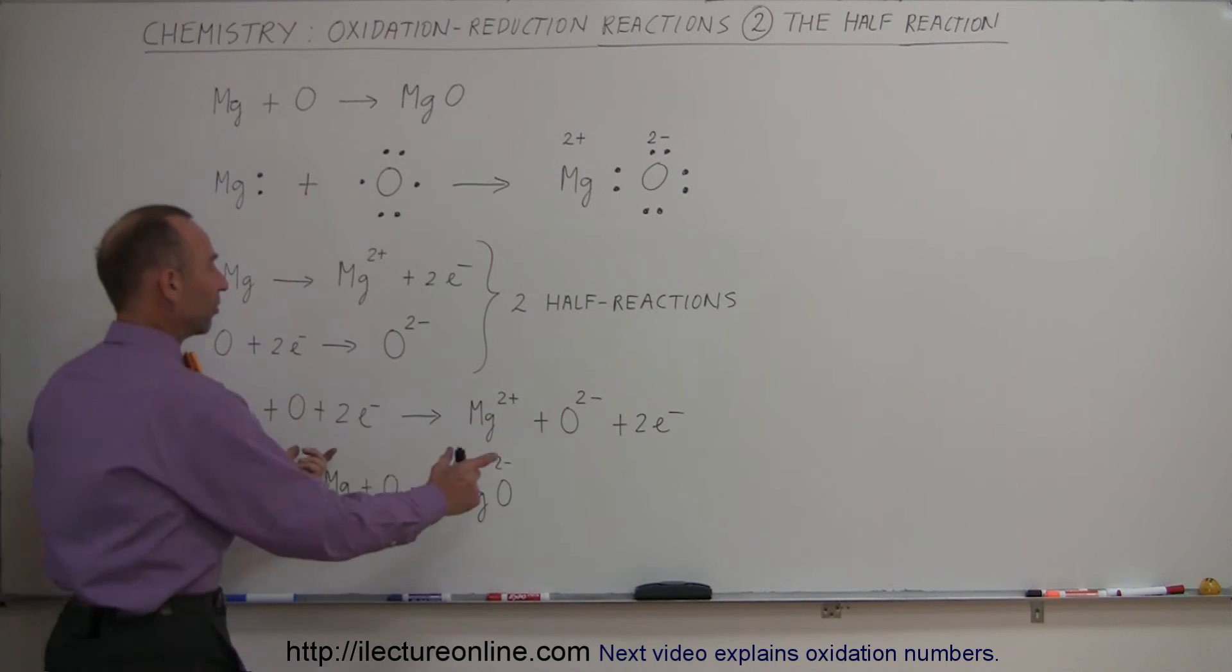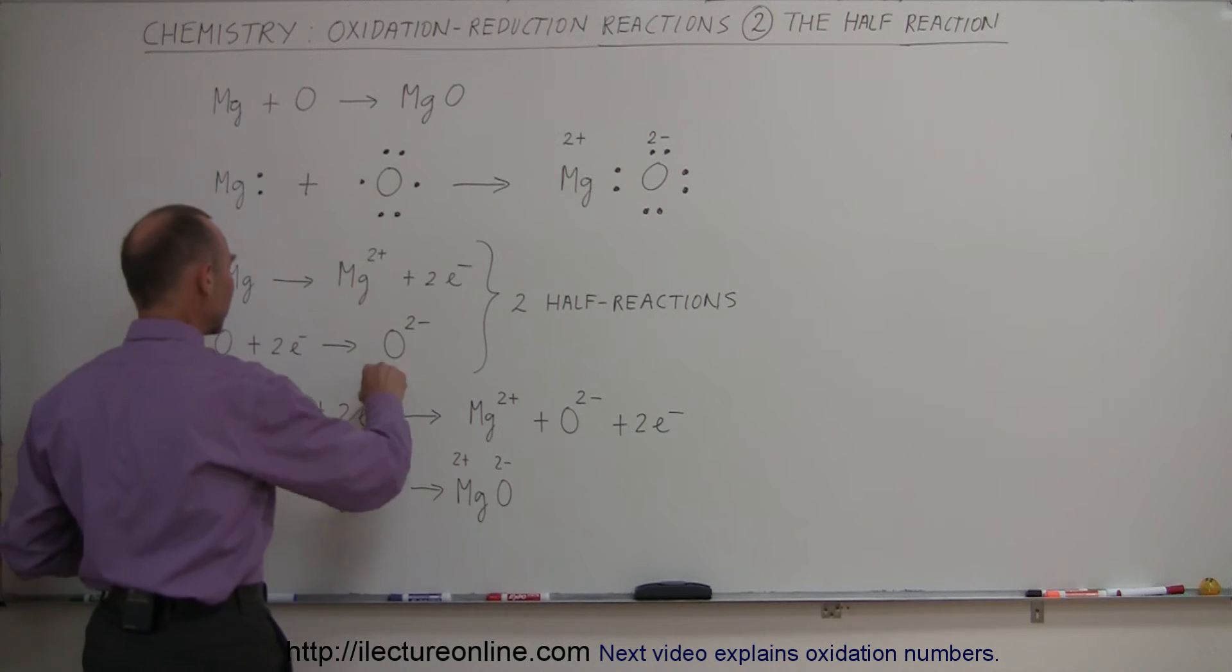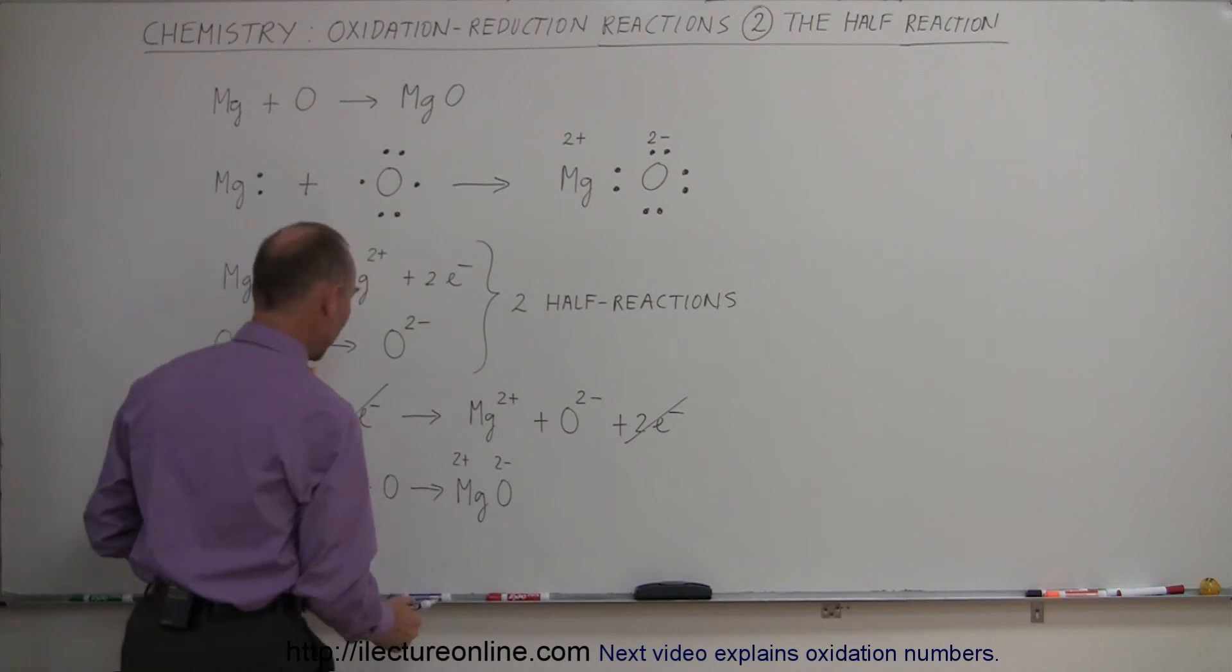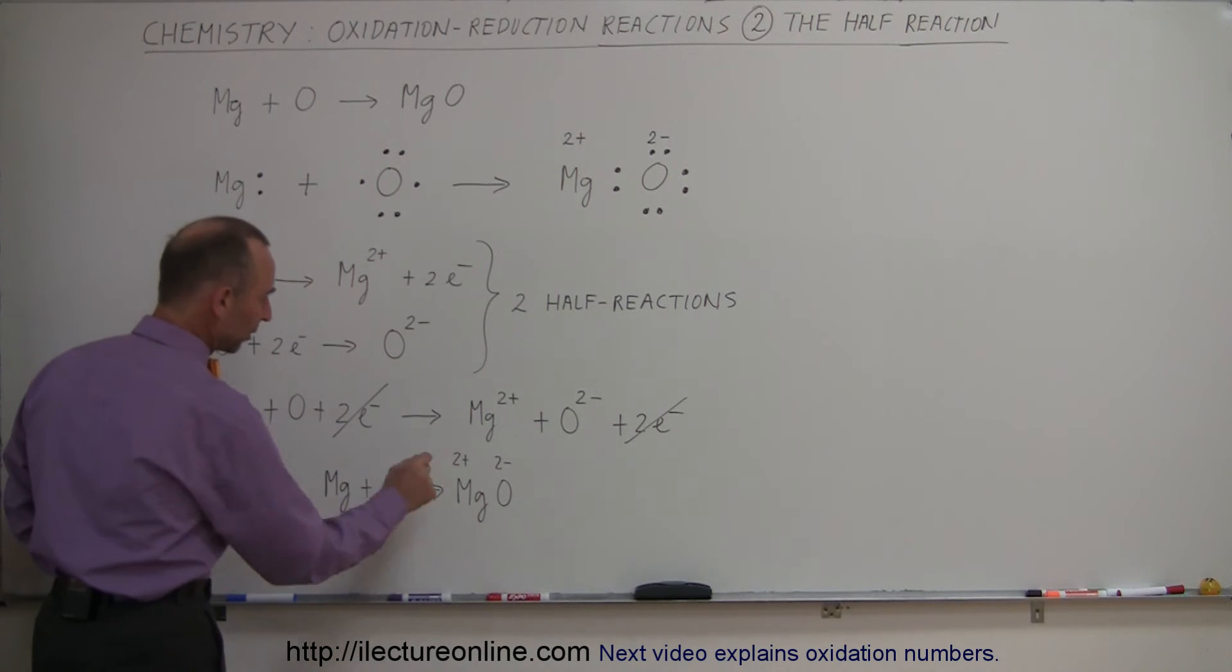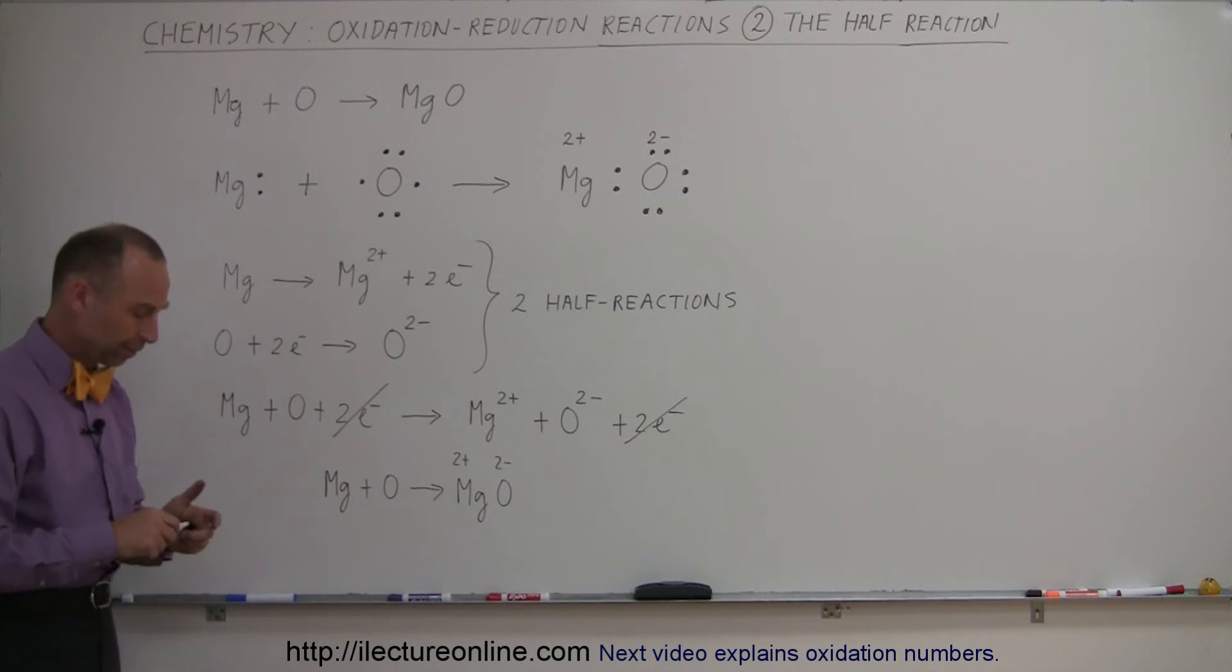since we have the same pairing on both sides of the equation, we can then get rid of the two electrons on both sides and end up with a single equation, we have magnesium and oxygen being joined together into magnesium oxide molecule.